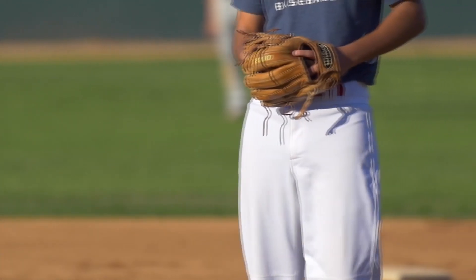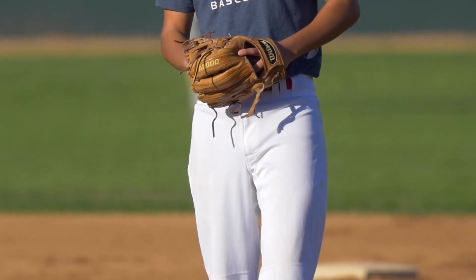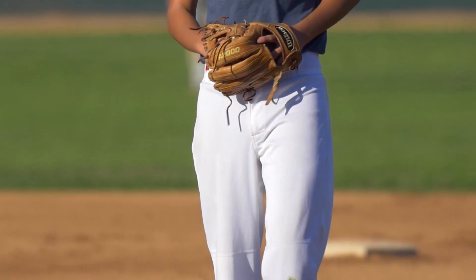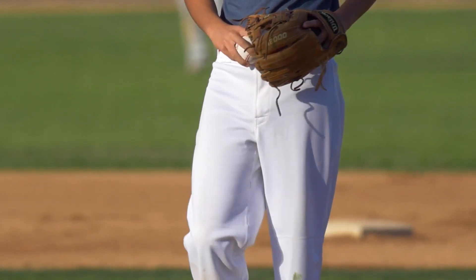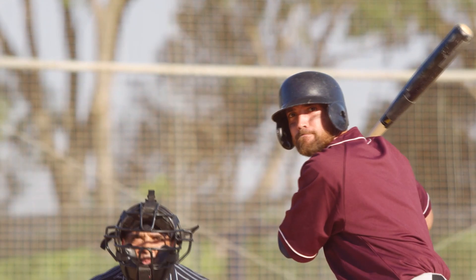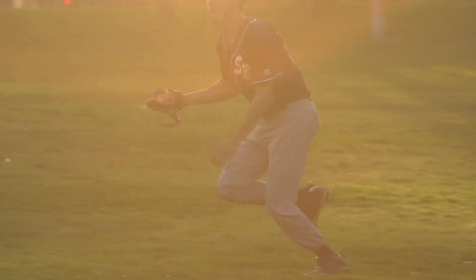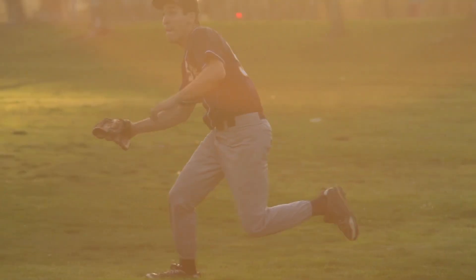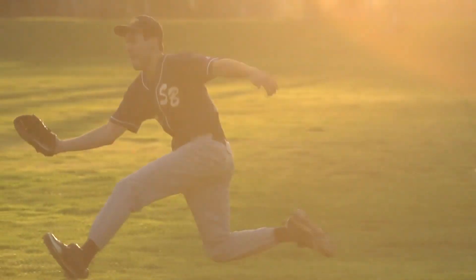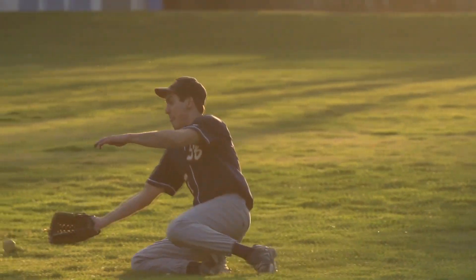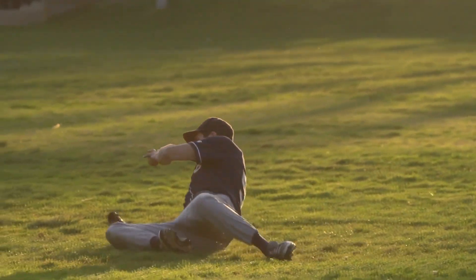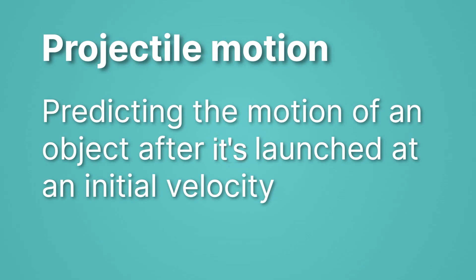Baseball is all about the motion of a projectile — the ball. A pitcher considers just how hard to throw a ball and to what spot. The batter watches carefully, tries to predict that location, and if he's lucky, a hit. The outfielder scrambles. There's no time to do math. He has to do physics in his head and try to predict where the ball will land and move himself to that spot. What exactly is projectile motion? It's just predicting the motion of an object after it's launched at an initial velocity — just what the outfielder and the batter are trying to do.